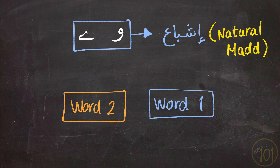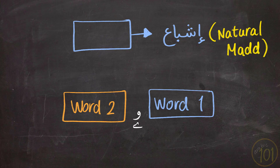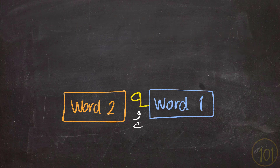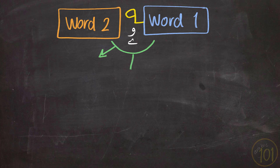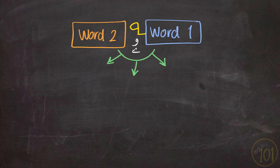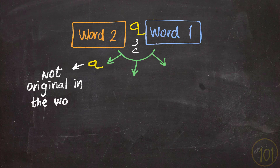First of all, إشباع happens between words, and it only involves extending the added ها to the end of the word. We also call it ها الكناية, and there are three conditions that have to be met for this ها to get إشباع, or in other words, to be extended. First, the ها itself is not an original part of the word — it has to be an added pronoun to the word.